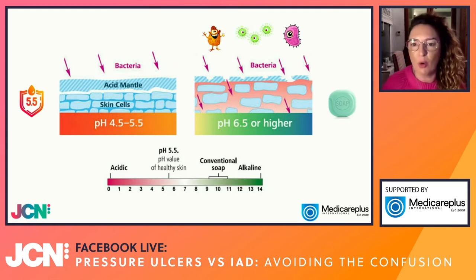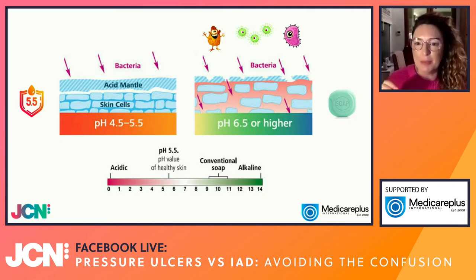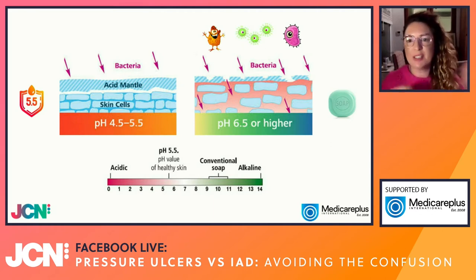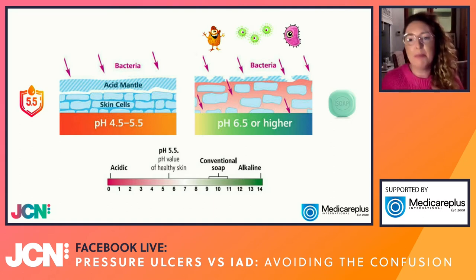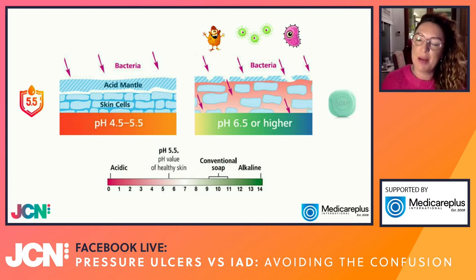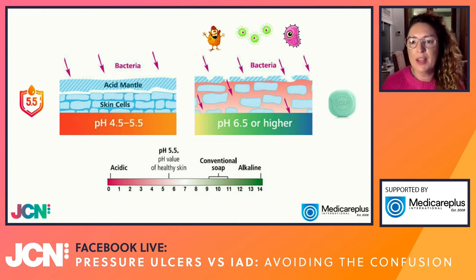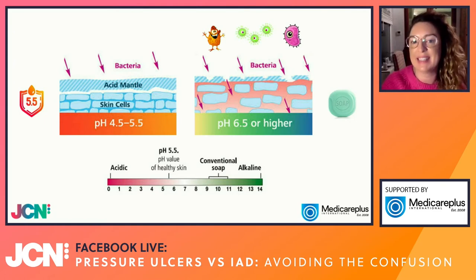When excess moisture from urine, faeces, or over-hydration occurs, our skin's acid mantle becomes more alkaline. When it reaches a pH of about 6.5, the acid mantle breaks and bacteria and pathogens are free to enter the skin. Our skin 'bricks' become unstable and break down, and we may see the epidermis start to shed. A good analogy is building blocks: the acid mantle is like cement protecting the bricks, and without it, bacteria can break the structure down.